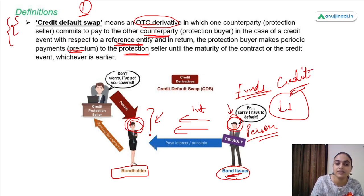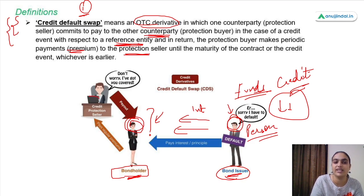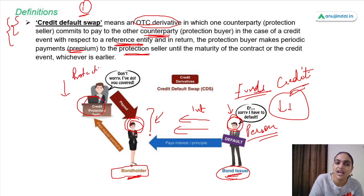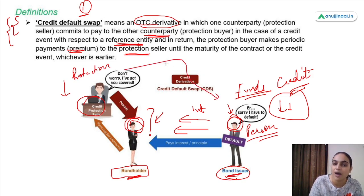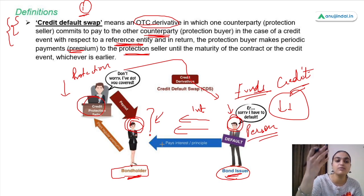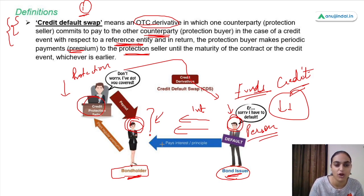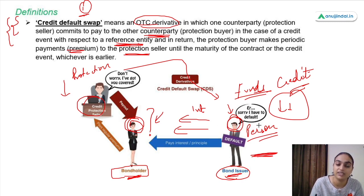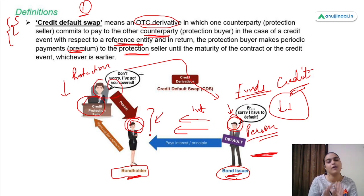In order to get protection against this credit risk or default risk, the bond holder — who is the protection buyer — will take a protection from a credit protection seller. The protection buyer pays timely premiums to the protection seller. In return, if the bond issuer defaults, the protection company will make the payment on behalf of the bond issuer. Such a contract is a credit default swap.